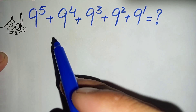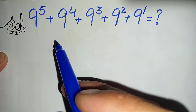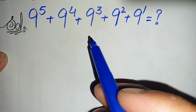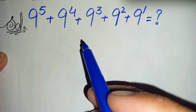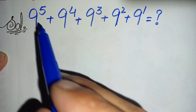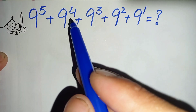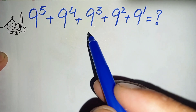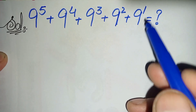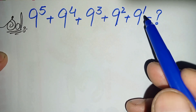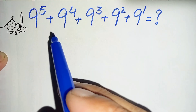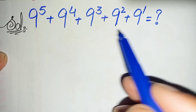Hello everyone. How to solve and find the value of this nice and interesting exponential equation: 9 to the power 5, plus 9 to the power 4, plus 9 to the power 3, plus 9 to the power 2, plus 9 to the power 1. This is a beautiful exponential equation having 9 in the base with the power decreasing from 5 to 1.